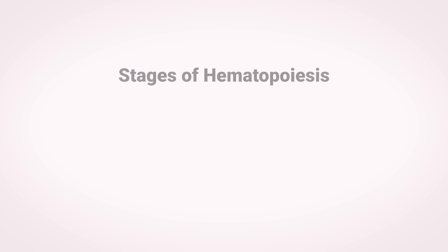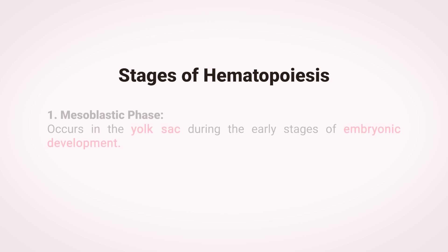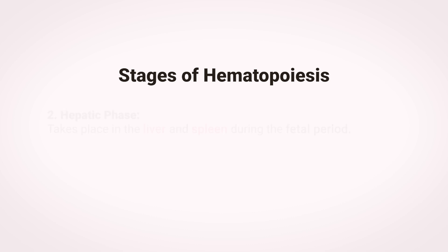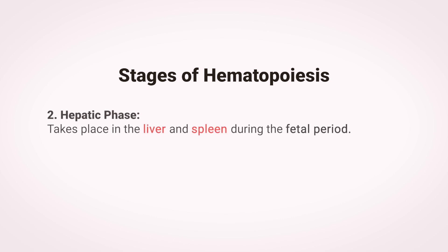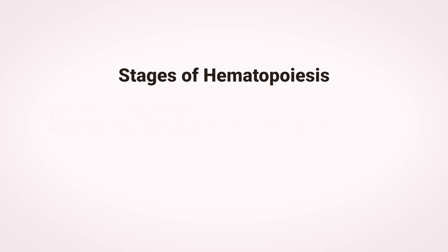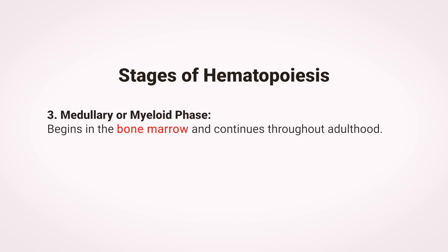Stages of Hematopoiesis: The Mesoblastic Phase occurs in the yolk sac during the early stages of embryonic development. The Hepatic Phase takes place in the liver and spleen during the fetal period. The Medullary or Myeloid Phase begins in the bone marrow and continues throughout adulthood.